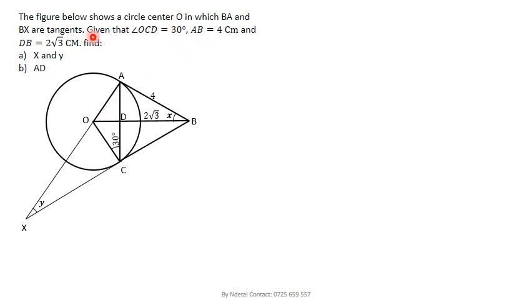BA and BX are tangents to the circle. We're also given that angle OCD is 30 degrees, AB is 4 cm, and DB is 2√3 cm. So DB from this point D to B is 2√3.